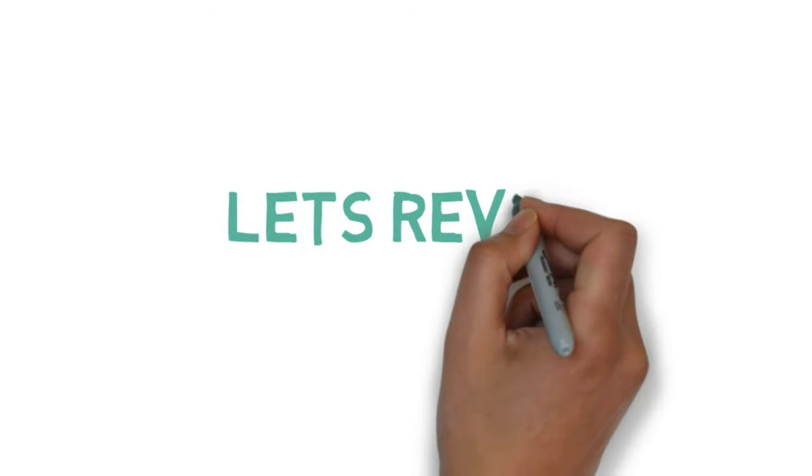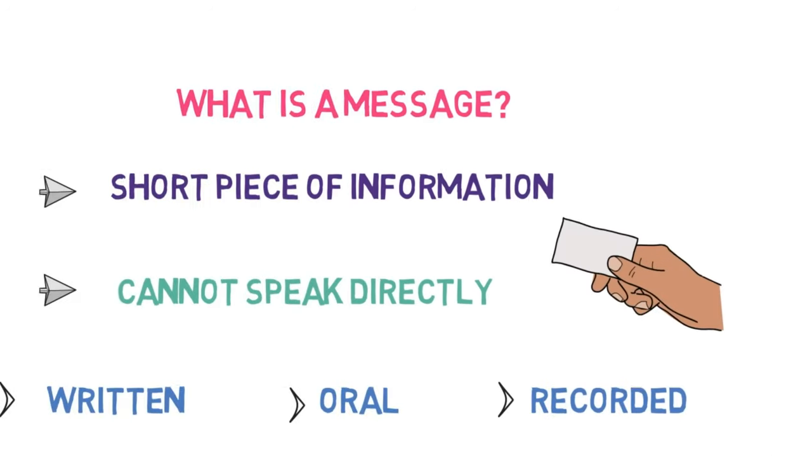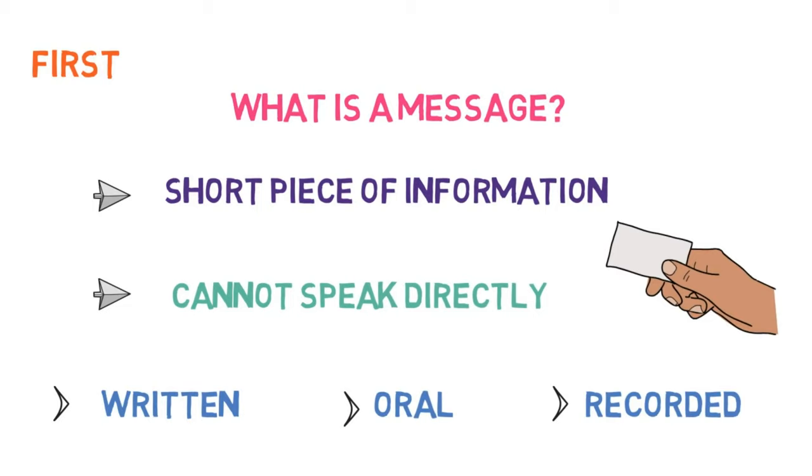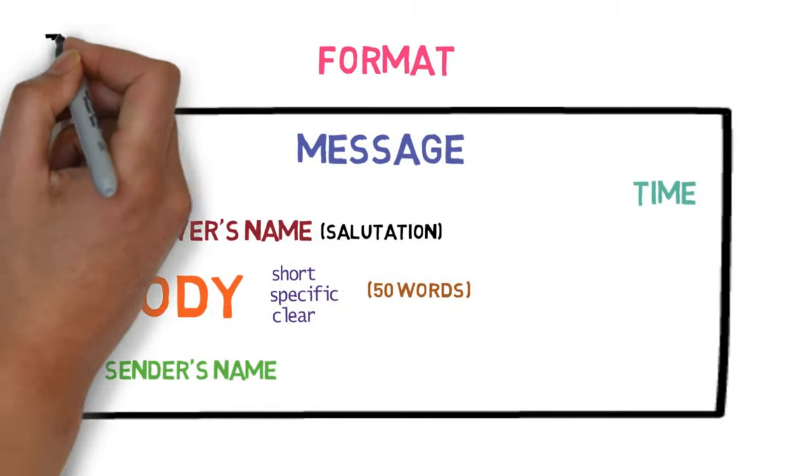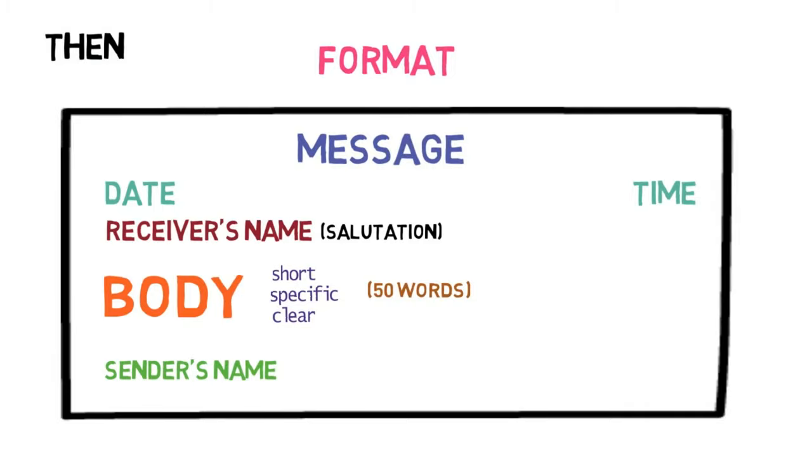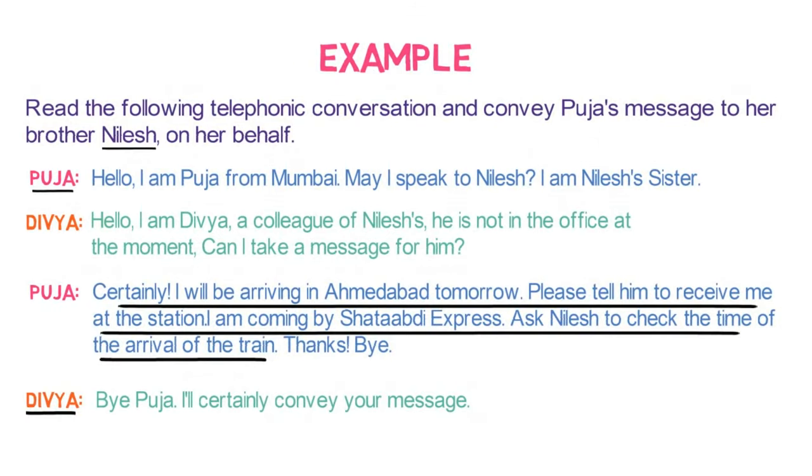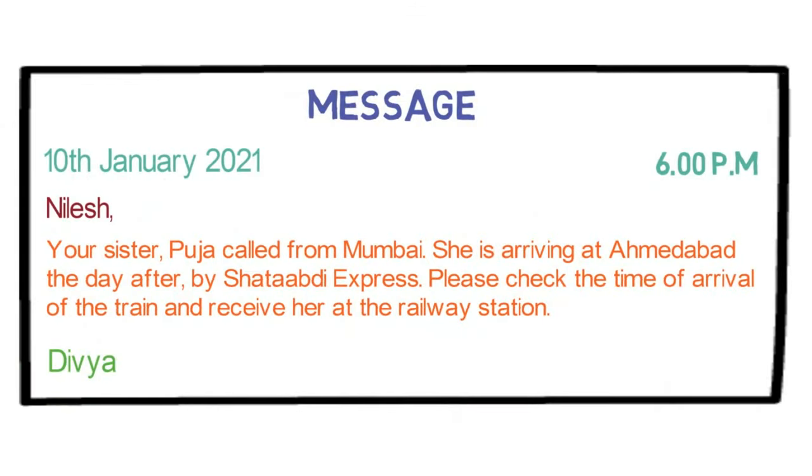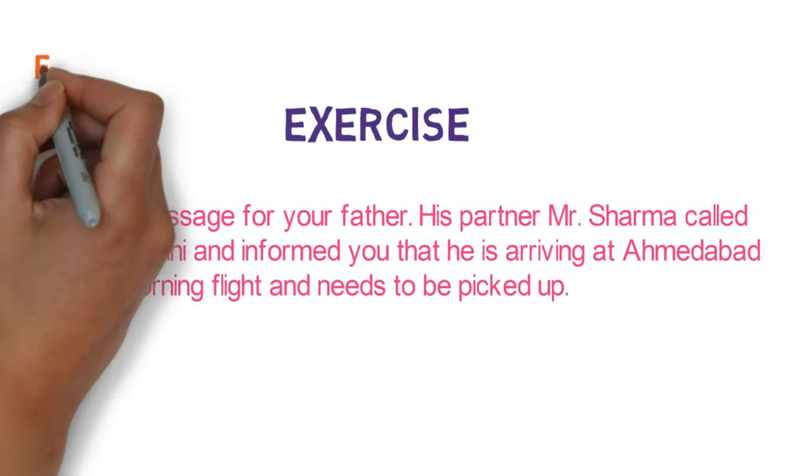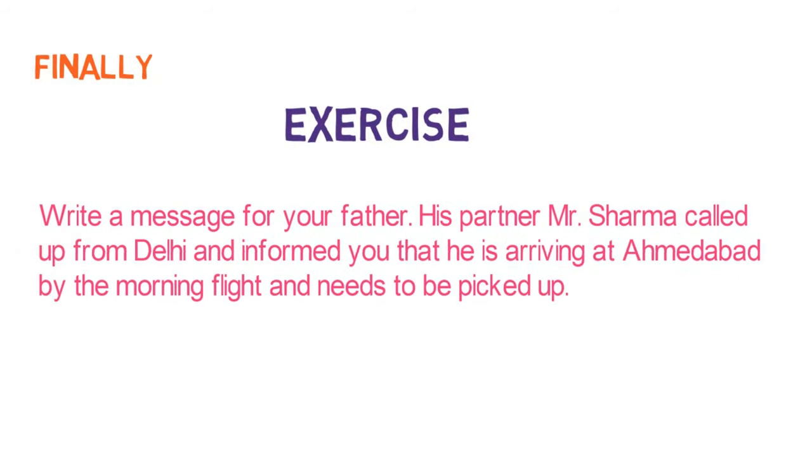That's all in this video. Let's quickly revise what we learnt in this lesson. First, we understood what is a message. A message is a short piece of information that you give to a person when you cannot speak to them directly. It can be in written or oral or recorded form. Then, we learnt the format of message writing which is something like this. Then, we understood how to write a message with an example. Finally, I gave you an exercise to practice whose answers you will be giving me in the comment section.